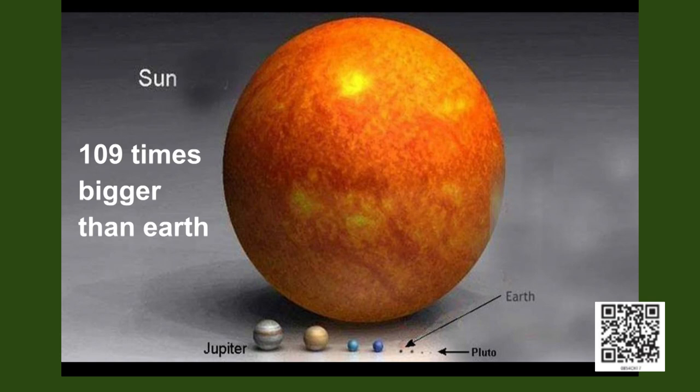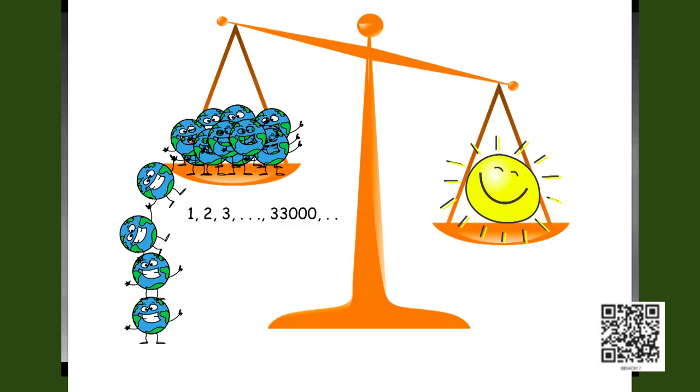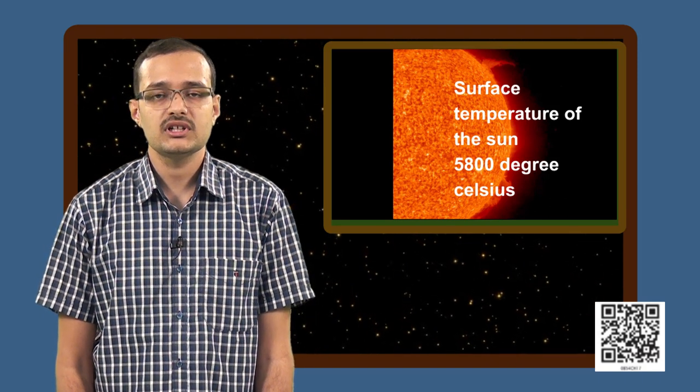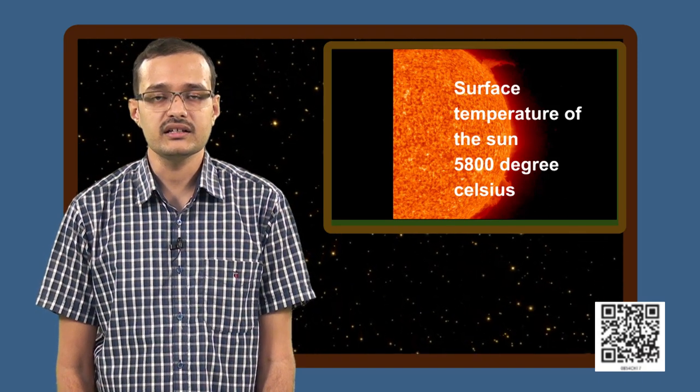The sun is a giant ball of plasma. To know how big the sun is, consider this: The sun is nearly 109 times bigger than earth and nearly 33,000 times more massive than earth. The surface temperature of the sun is approximately 5,800 degree Celsius.